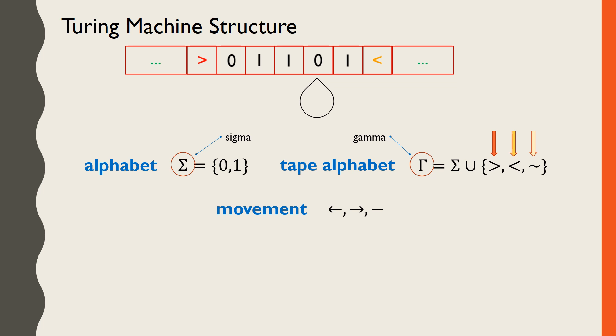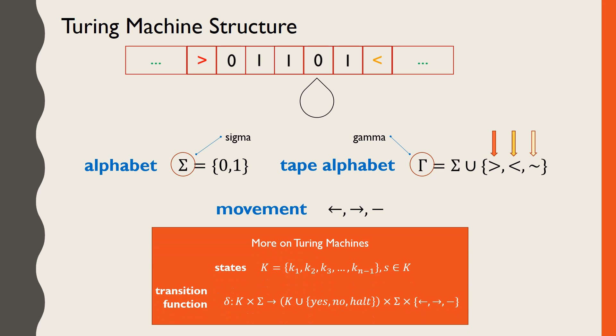With this setup, the tape acts as both an input-output device and a storage medium for information. There's more that goes into the functioning of a Turing machine, like states and transition functions, which we'll explore in another video.